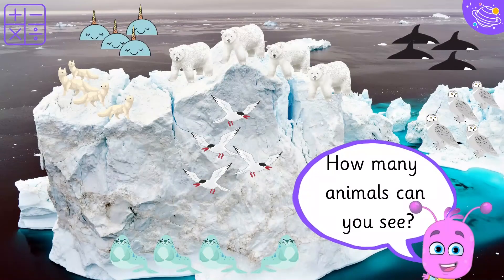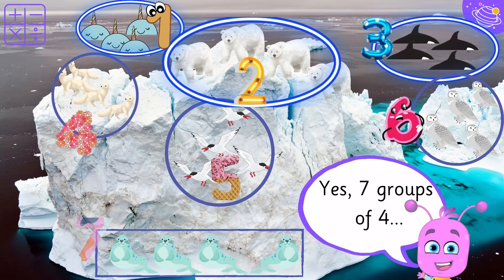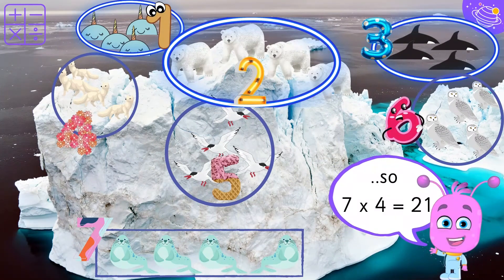How many animals can you see? Yes! Seven groups of four. So, seven times four equals twenty-eight.